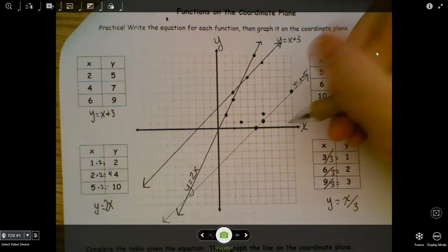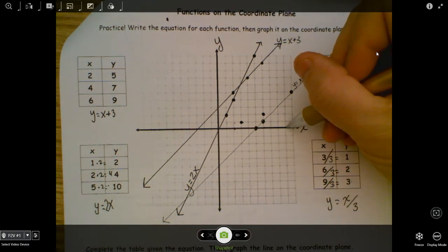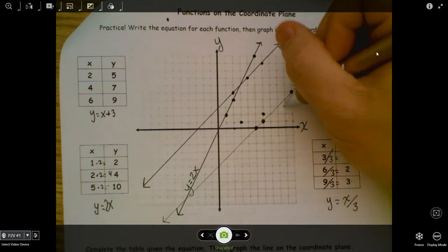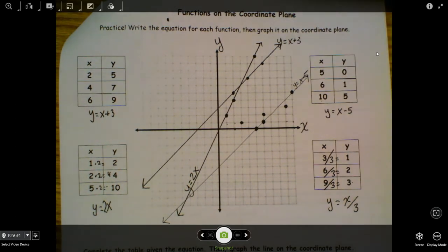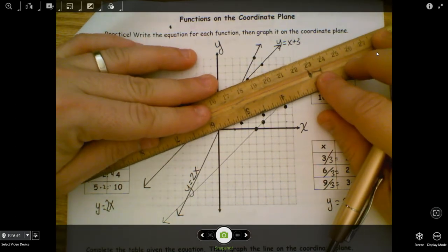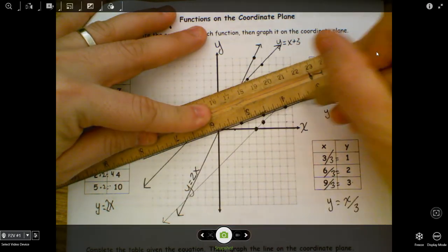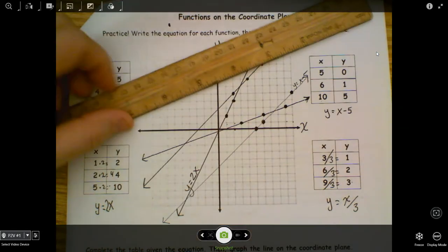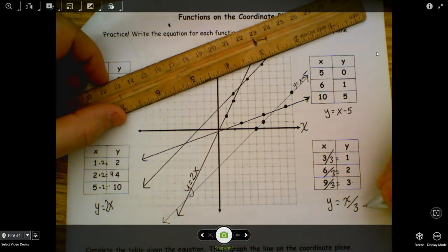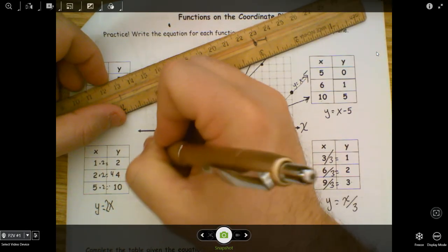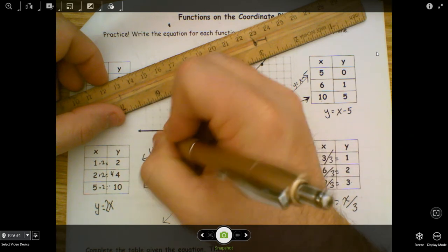Over 9, up 3. I know 9 is right here. One, two, three. So this is going to kind of be like a flatter line here. Line up my three dots on my ruler. Make a line with arrows at the end. And this is Y equals X divided by 3. I'm going to label it over here where I have more room.